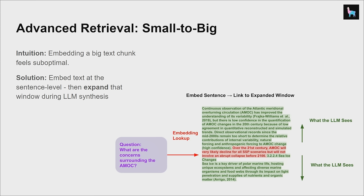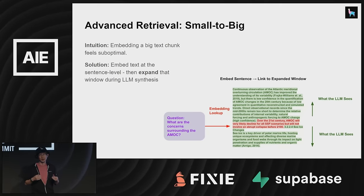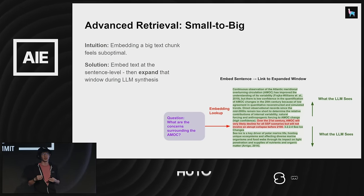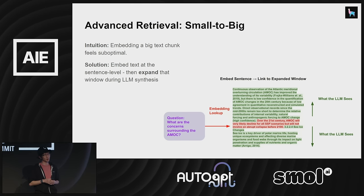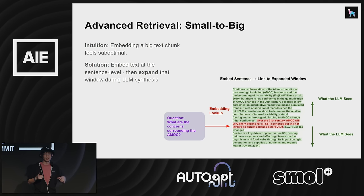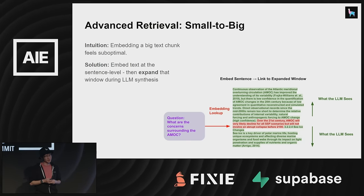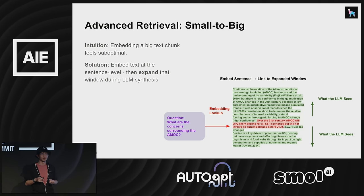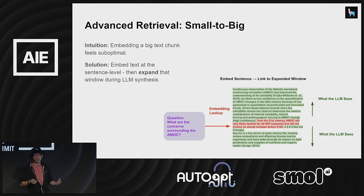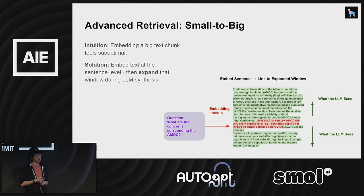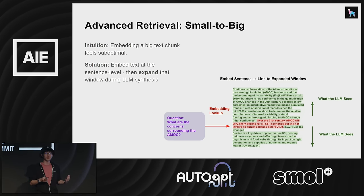Moving on to more advanced stuff: one thing we found generally helps is small-to-big retrieval. Right now, when you embed a big text chunk, you also synthesize over that same text chunk. That's a bit suboptimal because the embedding representation may be biased by irrelevant information in that chunk. So embedding a big text chunk can feel suboptimal. One thing you can do is embed text at the sentence level or on a smaller level, and then expand that window during synthesis time.